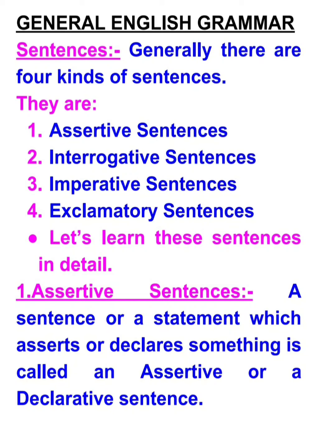Sentences. Generally, there are four kinds of sentences in English. They are: assertive sentences, interrogative sentences, imperative sentences, and exclamatory sentences. Let's learn these sentences in detail.